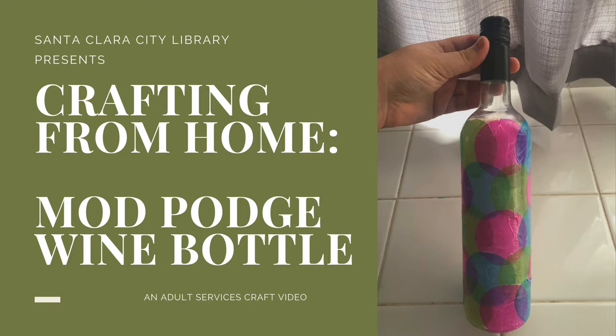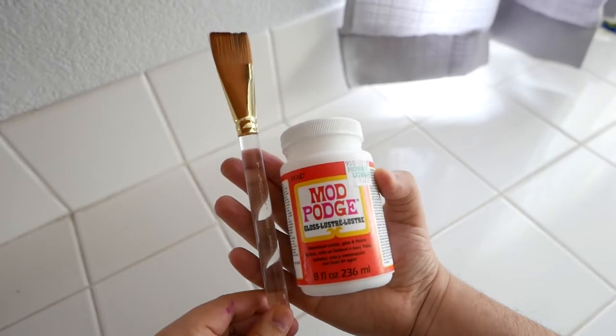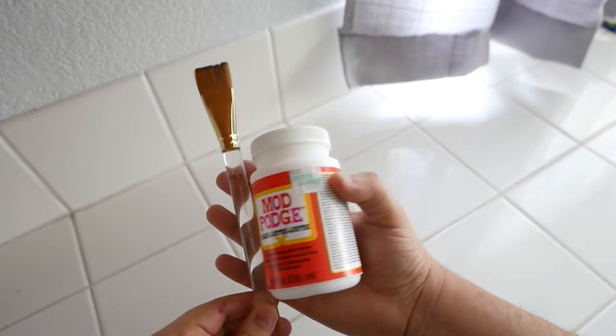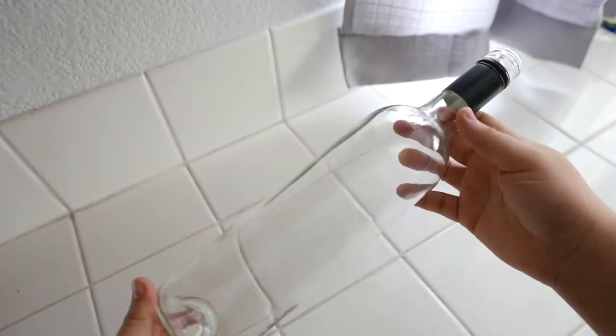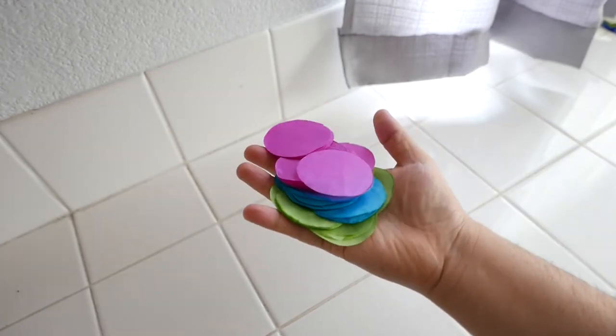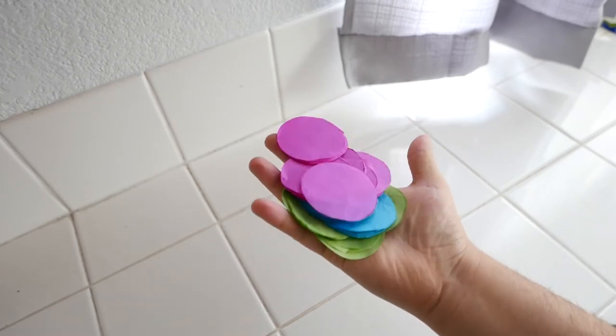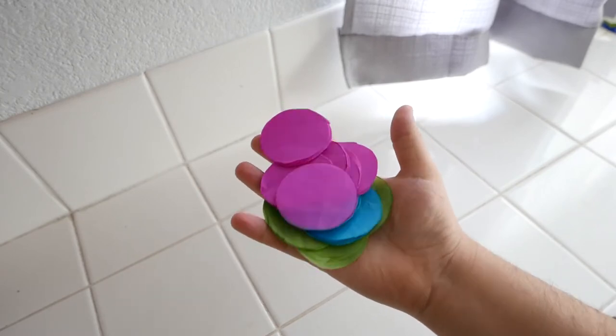We are now going to review the supplies that we'll need in order to make this craft. Mod Podge and a brush. An empty and cleaned wine bottle. Tissue paper in a variety of colors. I went ahead and cut mine into circles. You can use any shape you'd like.